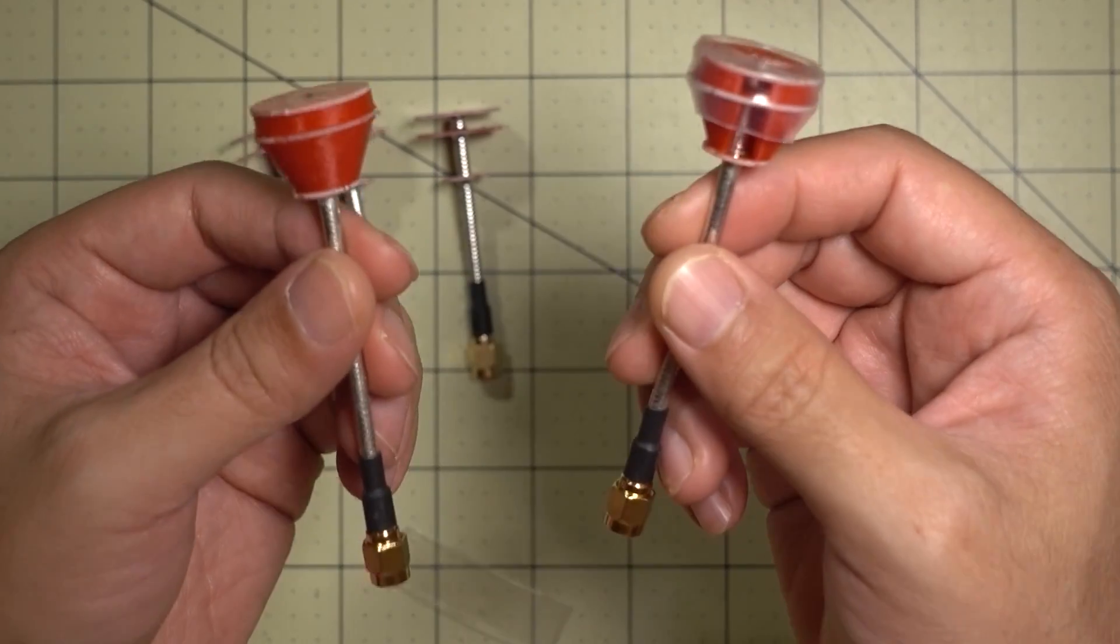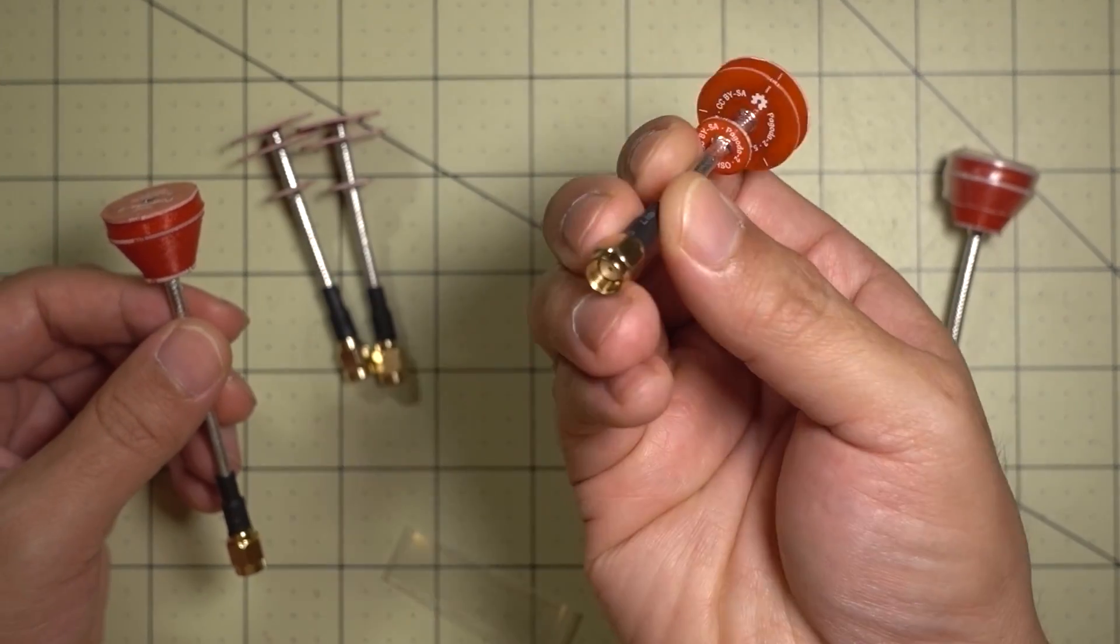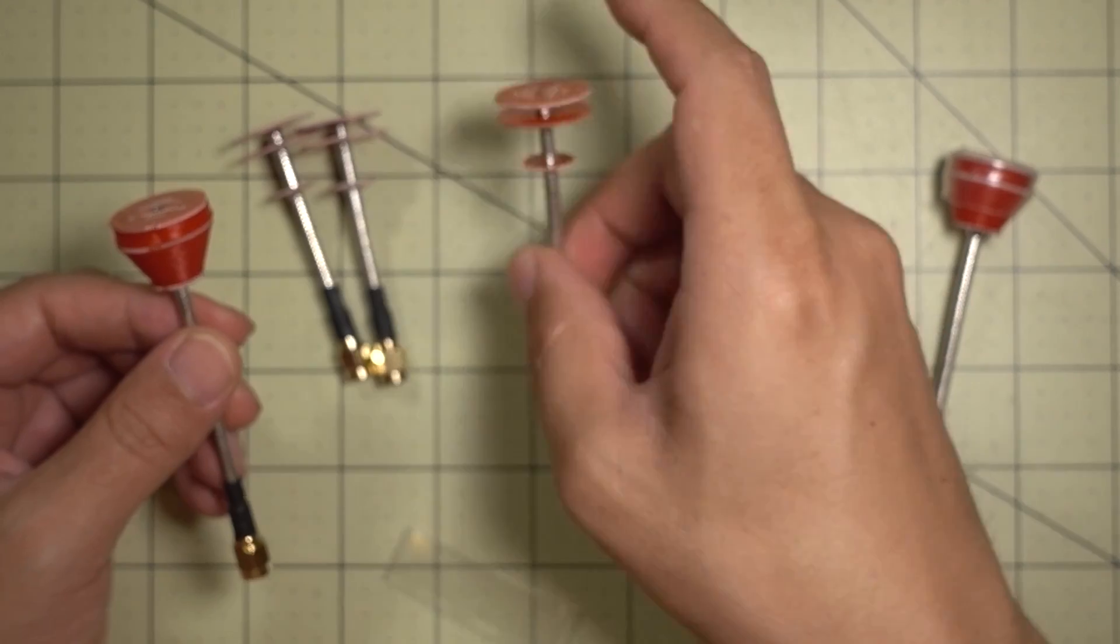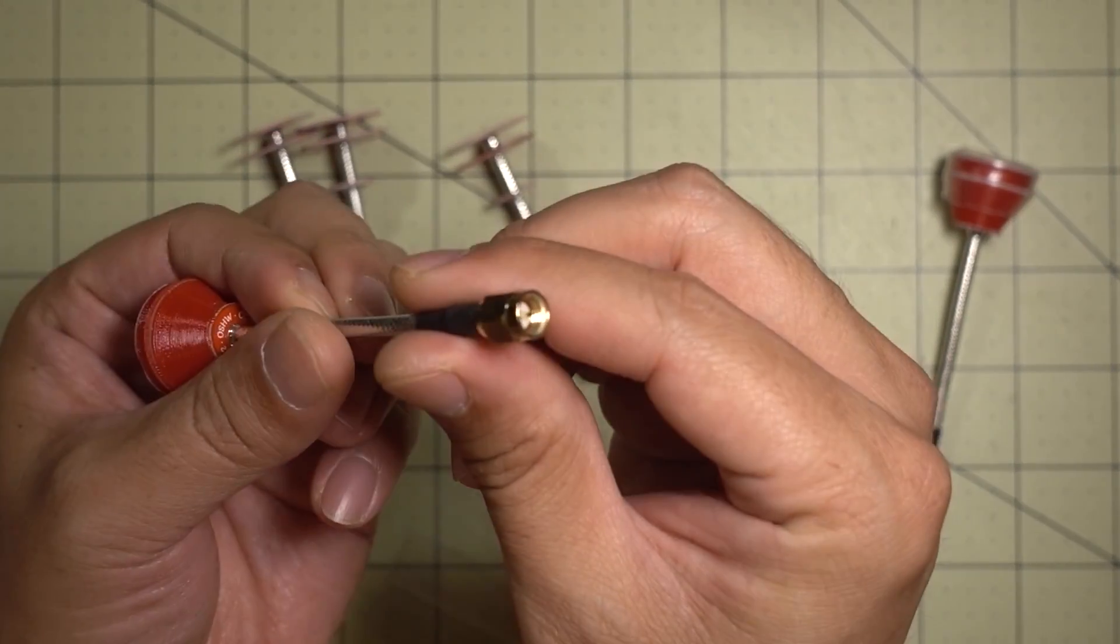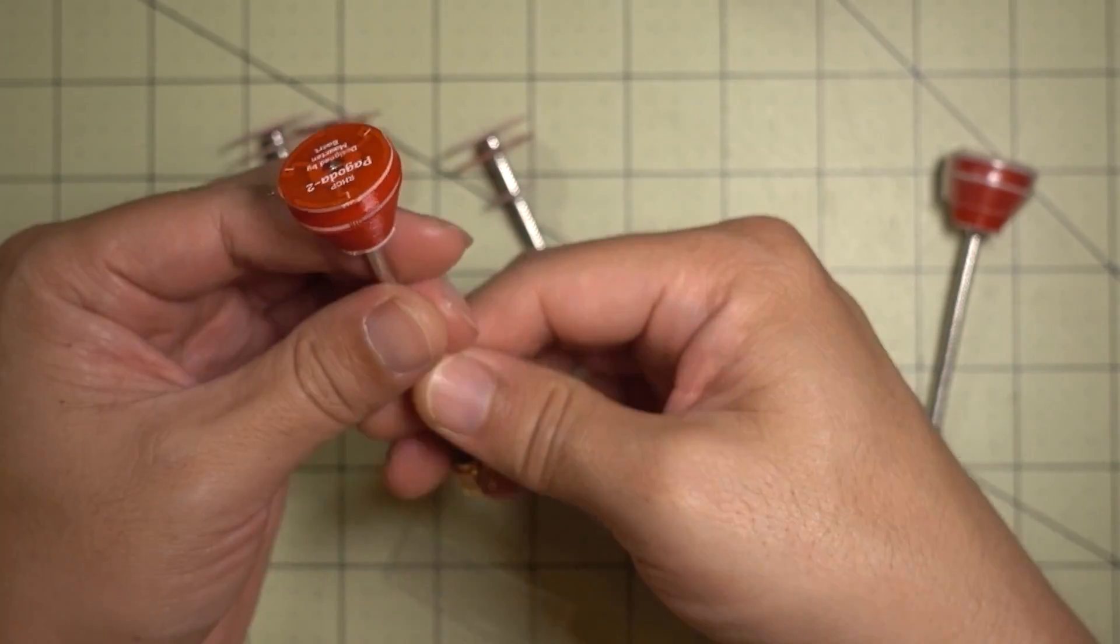Anyway, it comes in longer sizes and also shorter sizes. This is an RPSMA one. And this one is an SMA. So they come in two different sizes and two different versions.